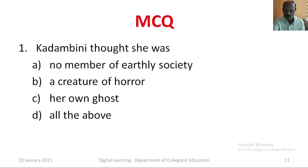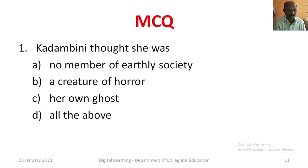Now let me check your understanding with some multiple choice questions. Question number one: Kadambini thought she was — Option A: No member of earthly society. Option B: A creature of horror. Option C: Her own ghost. Option D: All the above. The correct answer is Option D, all the above.